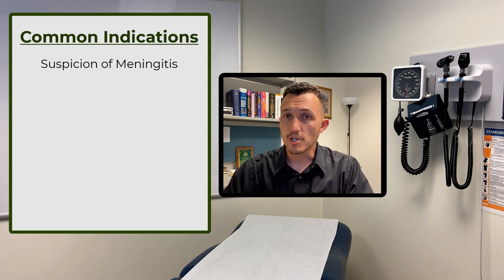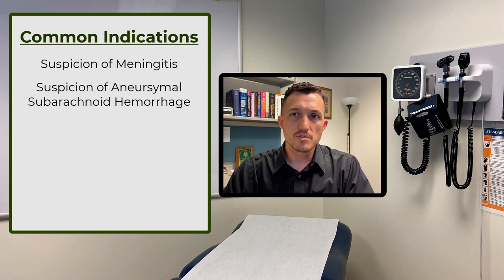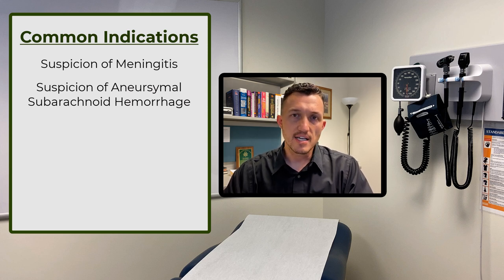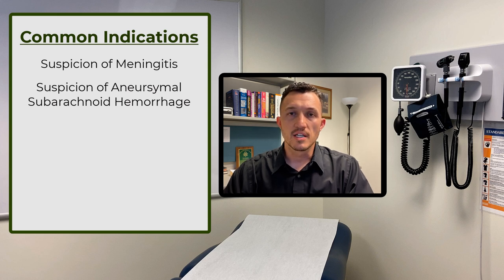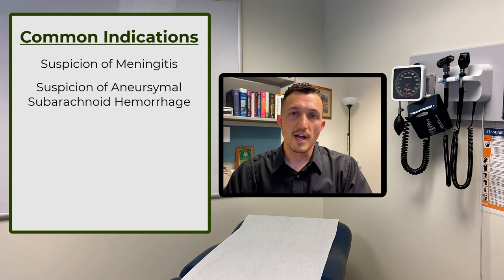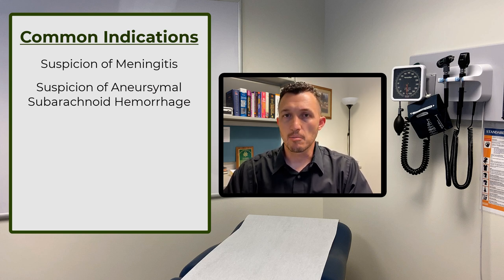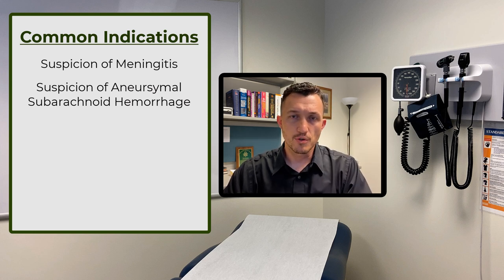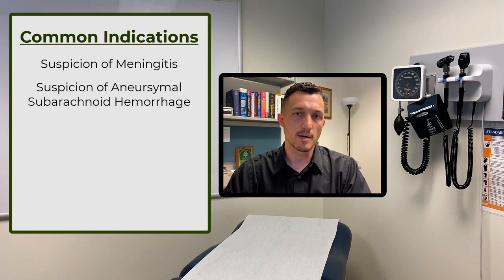Another common indication, especially in the emergency room, is to confirm or rule out a subarachnoid hemorrhage. The most important initial diagnostic study in a suspected aneurysm rupture is a CT of the head without contrast, which most of the time will reveal acute blood in a pattern consistent with a ruptured aneurysm. If the CT head without contrast is initially interpreted as negative for subarachnoid hemorrhage, we will confirm negative by performing a lumbar puncture and evaluating for any evidence of red blood cells or bleeding in the CSF. Those are our two most common emergency room indications.